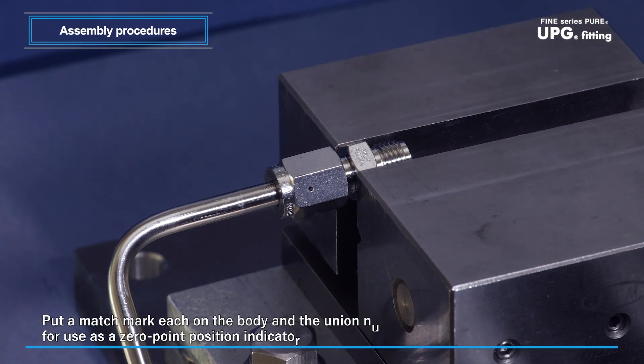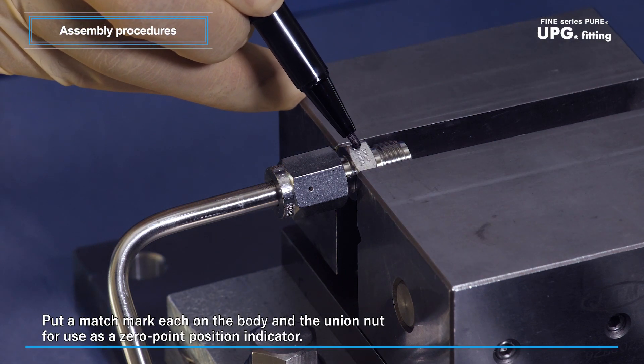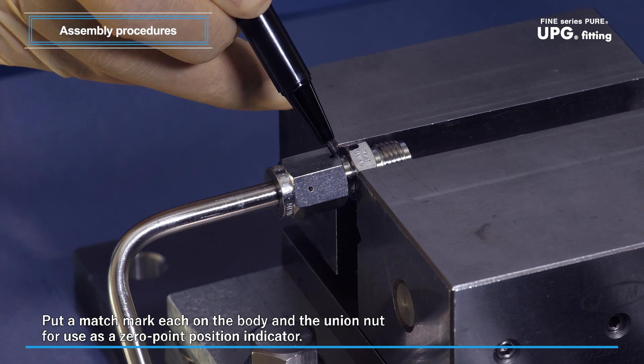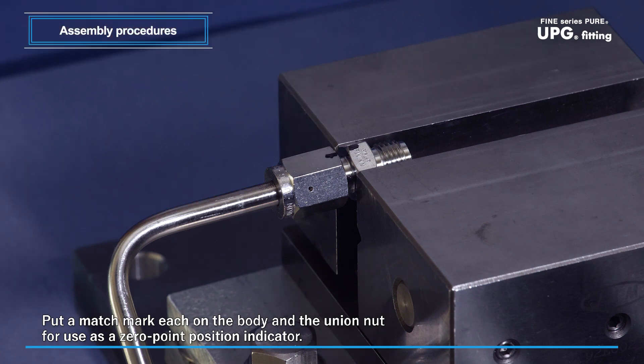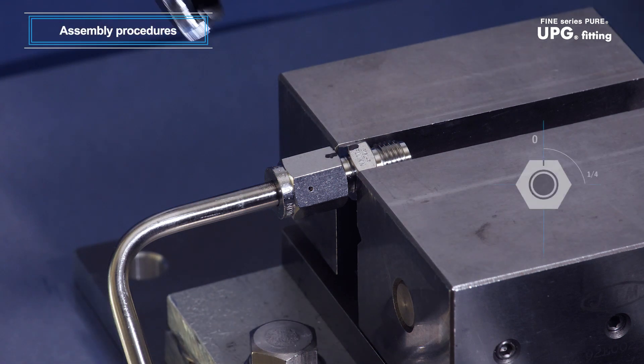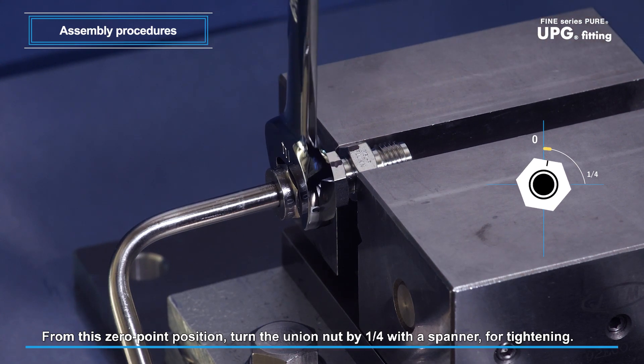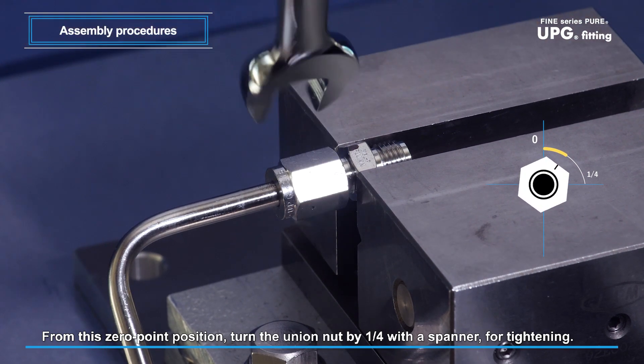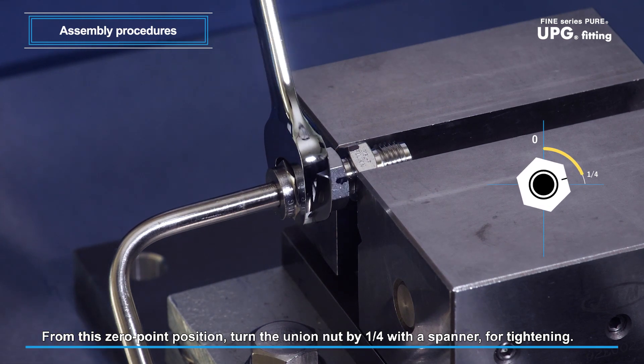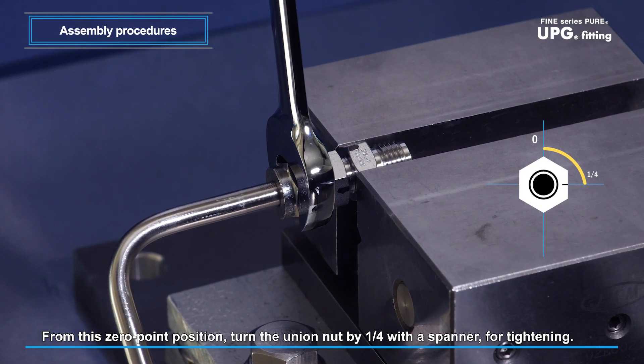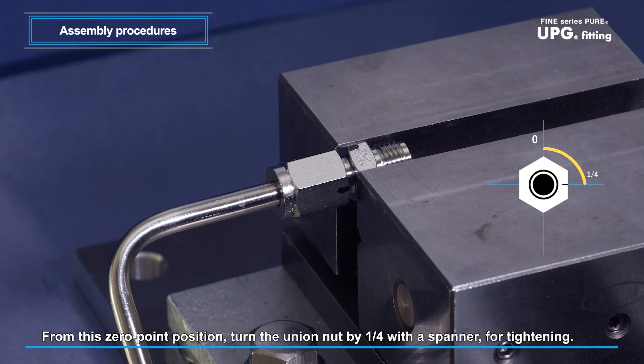Put a match mark on both the body and the union nut. This marking will be used as a zero point position indicator. From this zero point position, turn the union nut clockwise by one quarter with a spanner to tighten the fitting. This completes the assembly procedures.